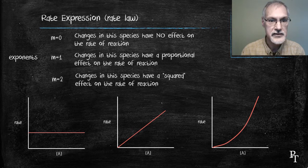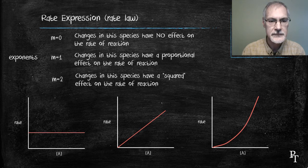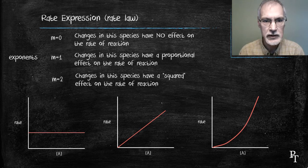Cutting the concentration of A in half, results in a one-quarter change in the rate of the reaction. So, these are our possible exponents.